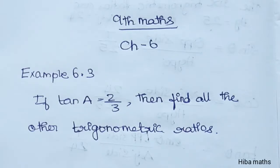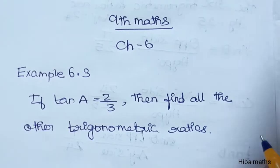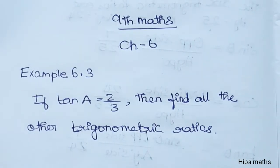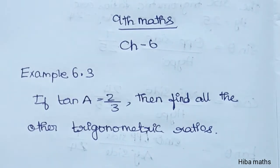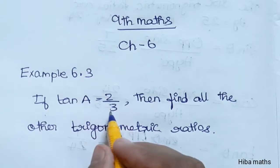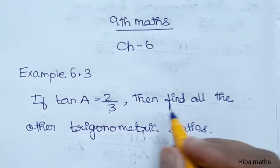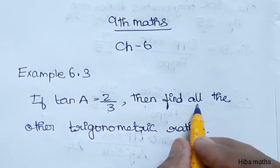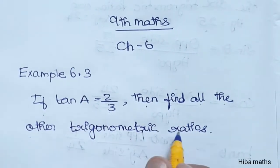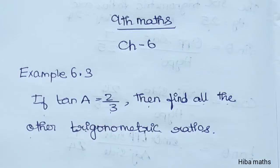Hello students, welcome to Habermax, 9th Standard Max, Chapter 6. Example 6.3 — the question is: if tan A is equal to 2 by 3, then find all the other trigonometric ratios.